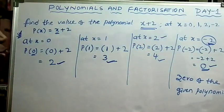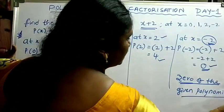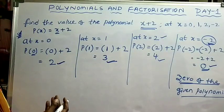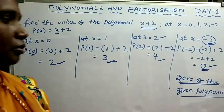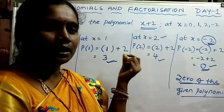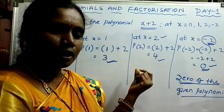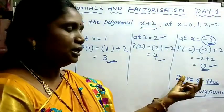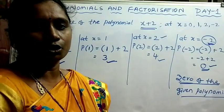In tomorrow's class, we will clearly learn about what is the zero of a polynomial and how to find the zeros of given polynomials. In today's class, we learnt about what a polynomial is, how to check whether an expression is a polynomial, degree of a polynomial, coefficients, types of polynomials according to degree and number of terms, polynomials in one variable, general forms of polynomials, and the value and zero of a polynomial. Thank you, children, one and all.